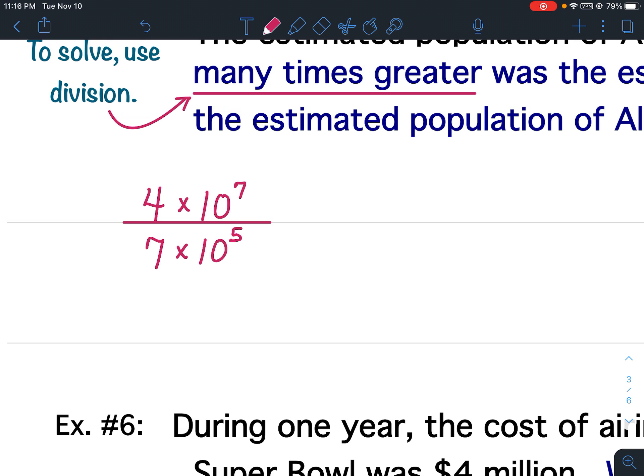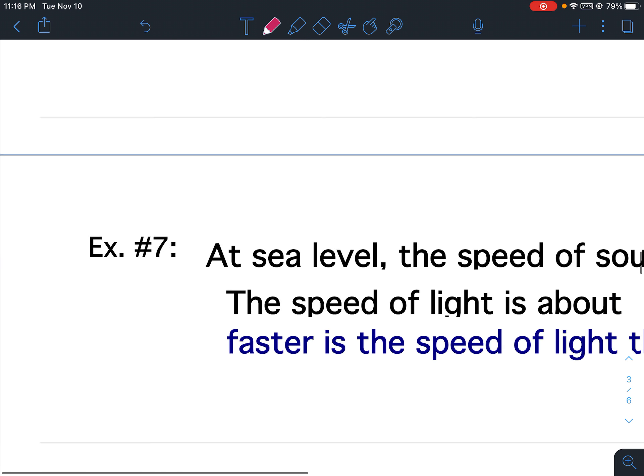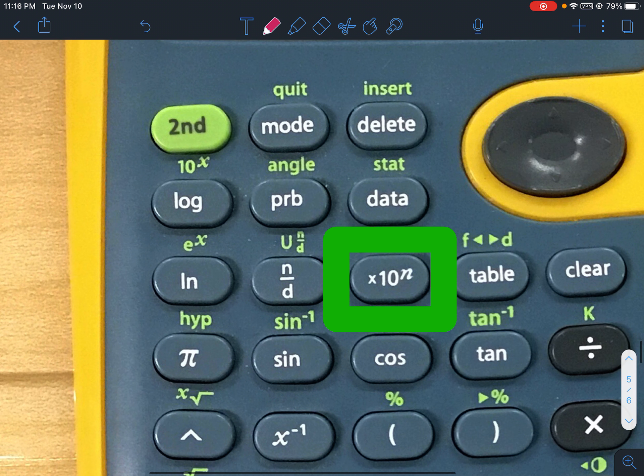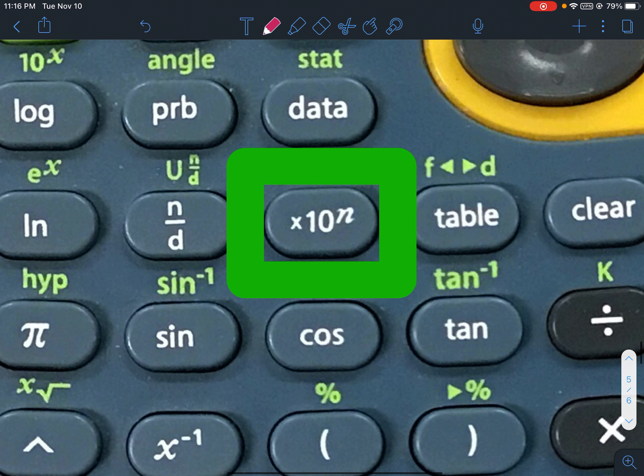Now, we're going to start using our calculator to do problems like this. So far, you should not have used a calculator at all. Now we're going to start using a calculator. If you're using the calculator at school, there's this great button that helps you put in scientific notation. Let me get to the picture of it. Alright. It's the times 10 to the nth button.